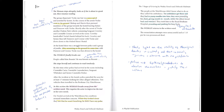People called him Bunnie. He was known as Bunnie. She stops herself and continues to read tonelessly. By this time other police had arrived at the scene, including Constable Caris, Constable Leyendeckers, Sergeant Whittaker, and Senior Constable Parker. After the incident at the hostel, police patrolled the area for at least seventeen minutes looking for other alleged offenders. Two vehicles then travelled to the Brisbane City Watch House.